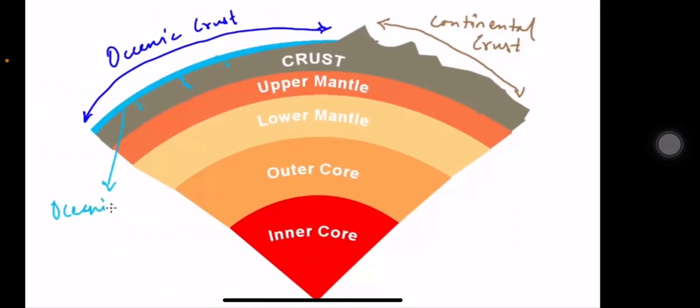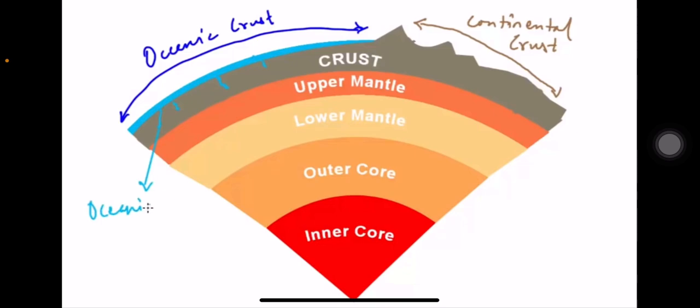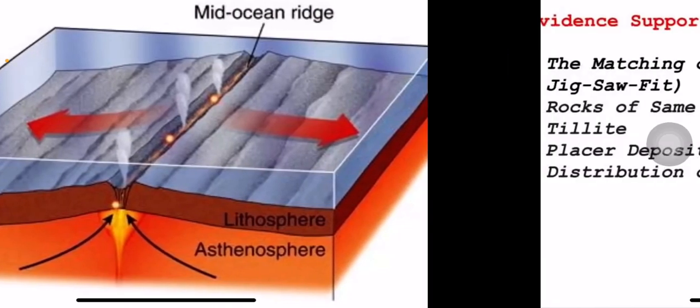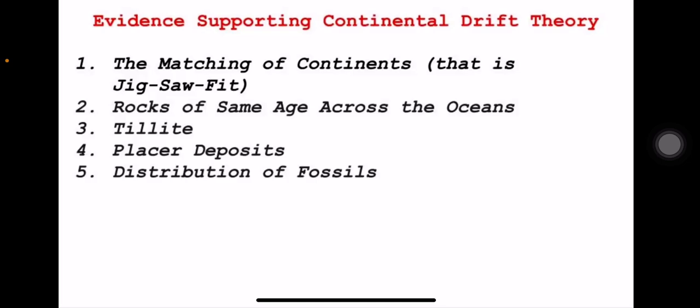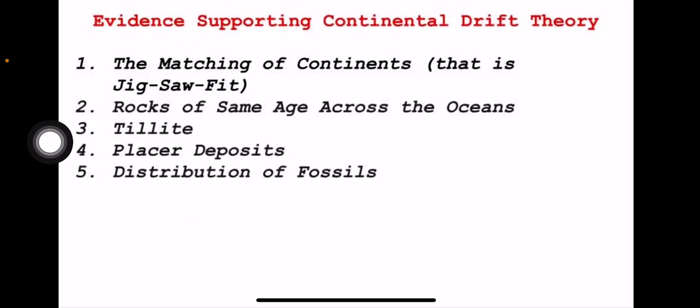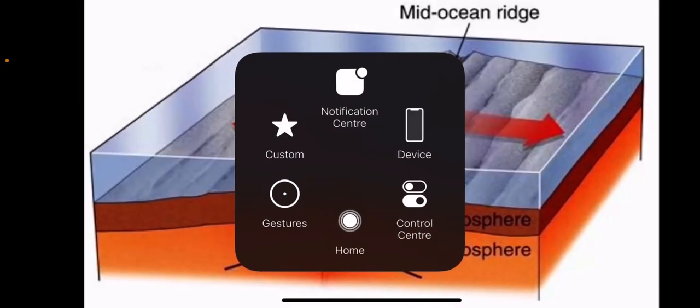So these are the five types of volcanoes from the 11th standard book. The next topic will be related to continental drift theory, which will be covered in a separate video. That's it for the video. Thank you for watching.